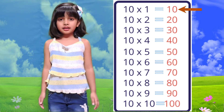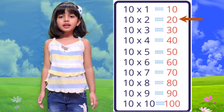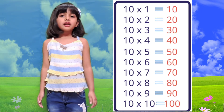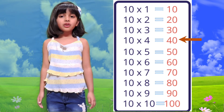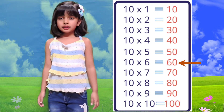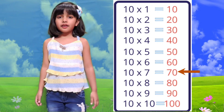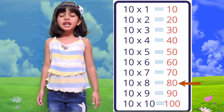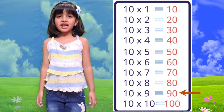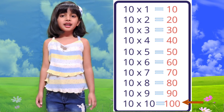Table of 10. 10 1 is 10, 10 2 is 20, 10 3 is 30, 10 4 is 40, 10 5 is 50, 10 6 is 60, 10 7 is 70, 10 8 is 80, 10 9 is 90, 10 10 is 100.